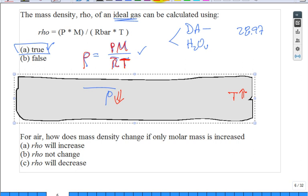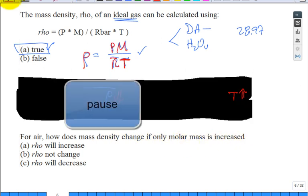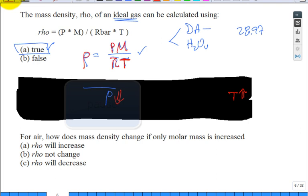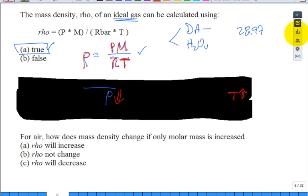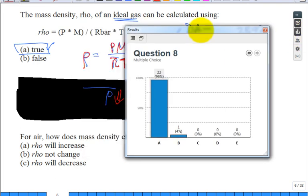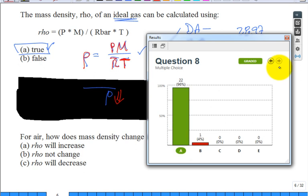Another question for air - it's not dry air, it's not saturated air, it's moist air. How does mass density change if only the molar mass is increased?